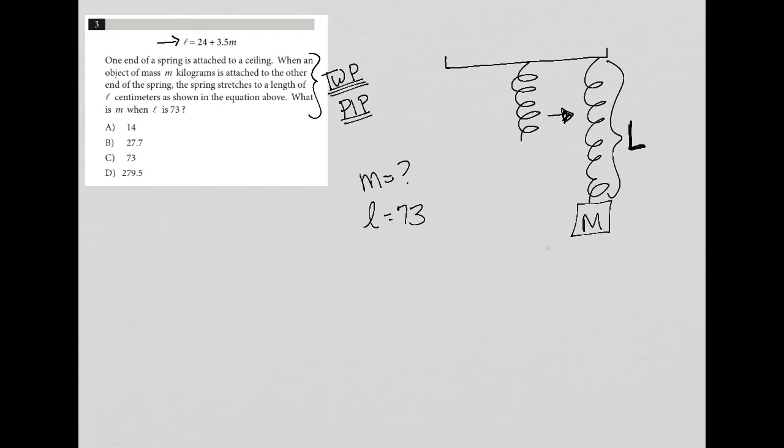Well, what you'll notice here is that we really don't need the drawing at all, because we have the equation L equals 24 plus 3.5M. So if I know that this equation is here, and I know that L is 73, I can replace L with 73. So the equation becomes 73 equals 24 plus 3.5M.